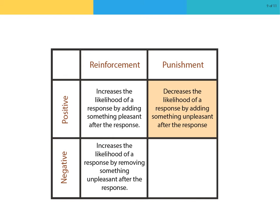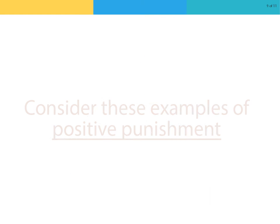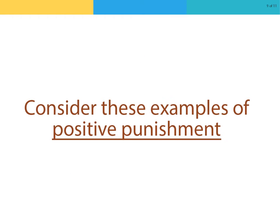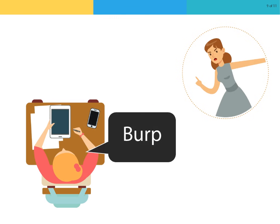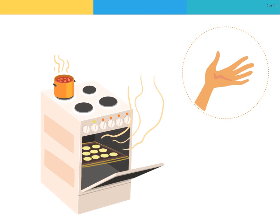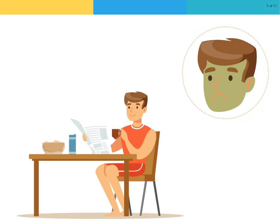Positive punishment decreases the likelihood of a response by adding something unpleasant after the response. Examples include: a child who burps loudly in class and is reprimanded by the teacher in front of the entire class, a child who touches a hot stove and feels pain, and a man who drinks spoiled milk and gets a bad taste in his mouth.